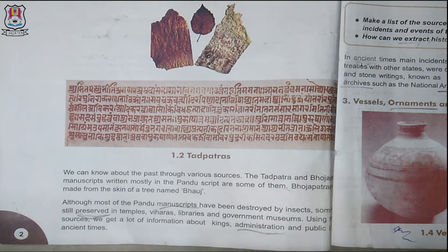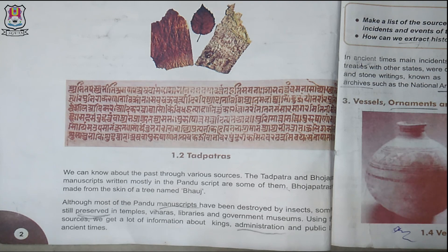Although most of the Pandu manuscripts have been destroyed by insects, some are still preserved in temples, viharas, libraries, and government museums. Using these sources, we get a lot of information about kings' administration and public life in ancient times. Tad tree ke leaves aur Boj tree ki chaal mein likhne ke liye use kiya jaata tha. Baad mein insects ne ye sab nashth kar diya. Baaki jo bacha, wo mandir mein, libraries mein, aur viharas mein hai. Viharas mein Bauddh sanyaasiyon ke liye rehne ka jagah hota hai. Government museum mein rakha hai.